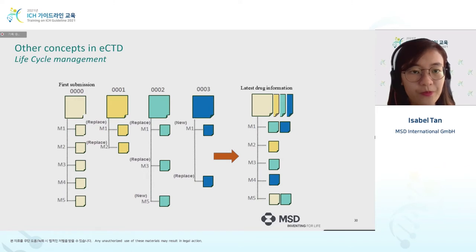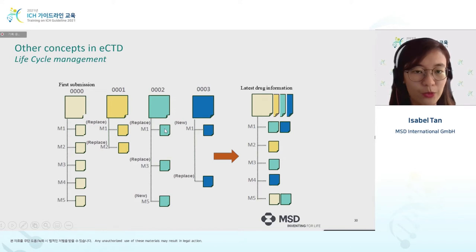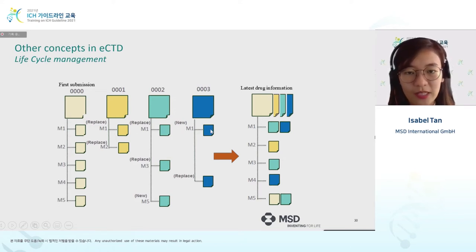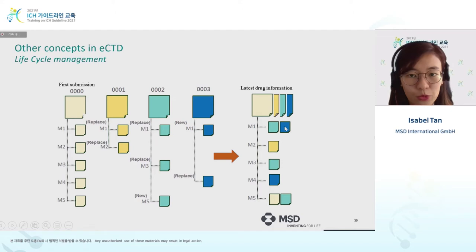For example, in sequence 0000 a yellow file is submitted; in sequence 0001, an orange file replaces the yellow file; in the next sequence, a blue file replaces the orange; and in the fourth sequence, a dark blue file replaces the light blue file. In the current view showing the most up-to-date information, you will only see the light blue file which replaced the orange one, as well as the dark blue file submitted as new in the application.